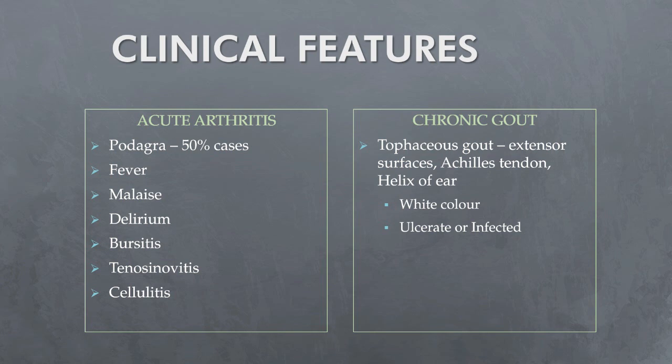Tophi have a white color, differentiating them from rheumatoid nodules. They can ulcerate and discharge white gritty material, become infected, or induce a local inflammatory response with erythema and pus in the absence of secondary infection. Occasionally tophi may develop in the absence of previous attacks, especially in patients on thiazides who have coexisting osteoarthritis. Chronic hyperuricemia may also be complicated by renal stone formation or, if severe, renal impairment due to interstitial nephritis from urate deposition in the kidney.